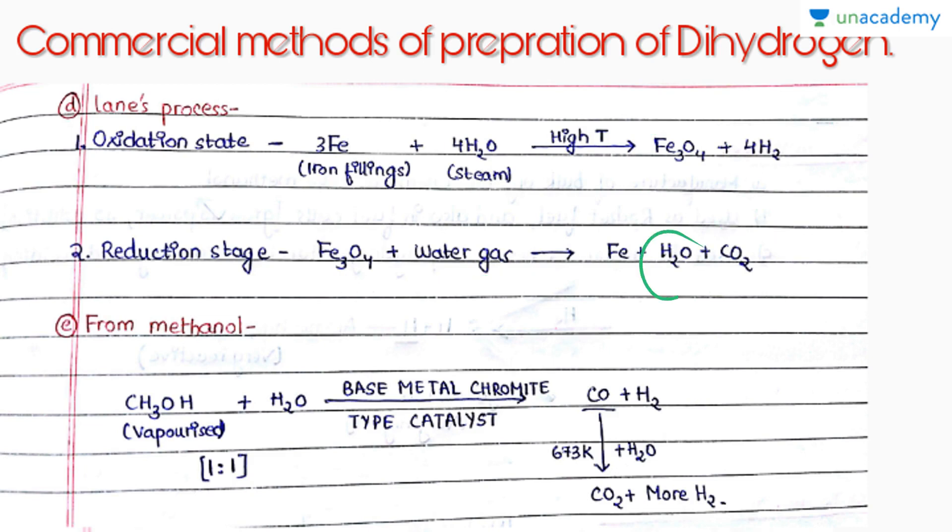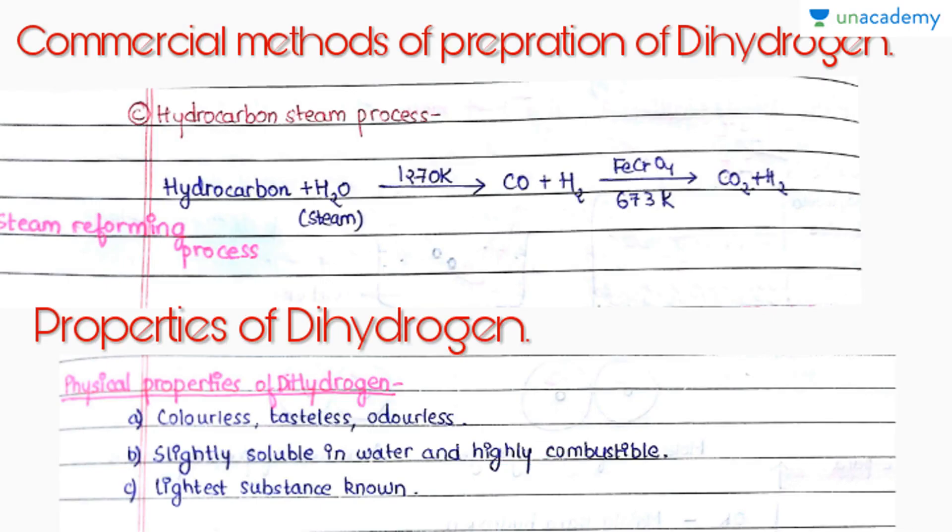Another process is from methanol. We take methanol and water in 1:1 molar ratio in the presence of a special catalyst known as base metal chromite catalyst. This reaction gives us water and synthetic gas. We pass steam at very high temperature so that carbon monoxide changes into carbon dioxide and our hydrogen can be freed.